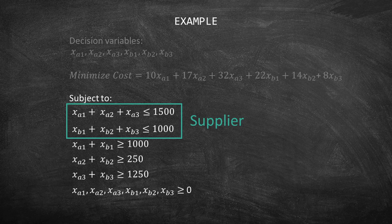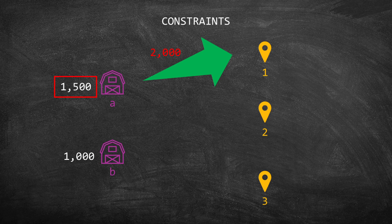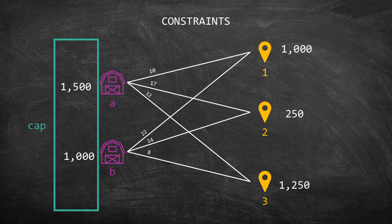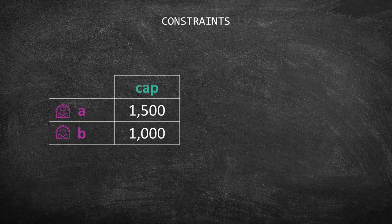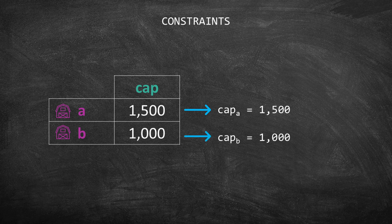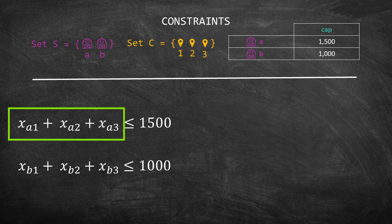First, let's start with the suppliers constraints. These state that each supplier cannot send more products than its capacity. I'm going to call their capacity as CAP. If you take a look at our network, supplier A has a capacity of 1,500 and supplier B of 1,000. As you see on your screen, we can create a table and CAP index A represents 1,500 and CAP index B represents 1,000. Recall that we have two suppliers constraints. Take a look at the left-hand side of the first constraint.